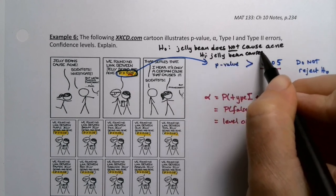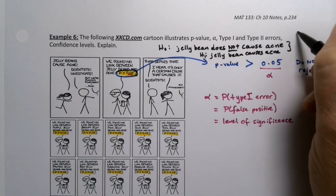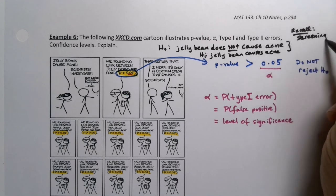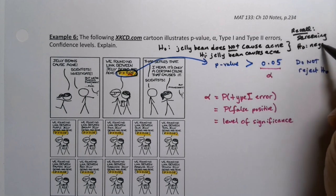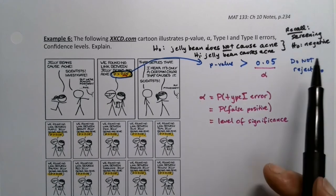Remember like in screening tests, the negative is actually the null hypothesis. So this would be a screening test. So we would have a negative for H0 and a positive for H1. We learned that in section 10.1 as well.